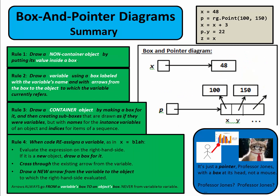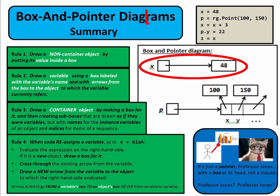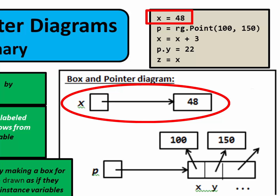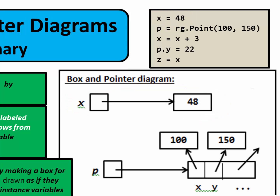In summary, there were four rules. Rule 1: for a non-container object, put its value inside a box. Rule 2: for a variable, draw a box, put the variable's name beside it, and draw an arrow from the box to the object to which the variable refers — for example, x refers to 48, so we have an arrow from x to 48. Rule 3: draw a container object by making a box for it with sub-boxes, treating each sub-box like a variable.